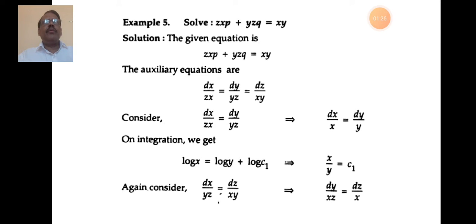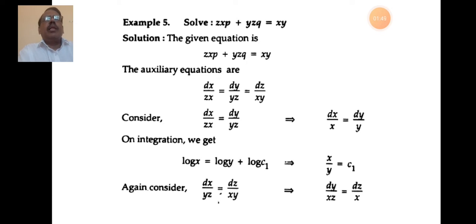You solve this auxiliary equation by either the grouping method or the multipliers method. You may solve by any one method, or you may need to apply both methods for a given problem. If u and v are two solutions of the given equation, then you write φ(u, v) = 0 as the general solution of the given partial differential equation.